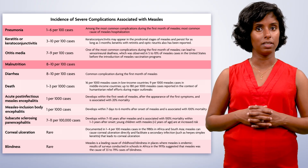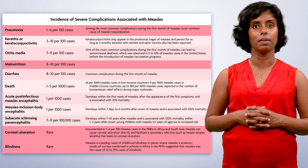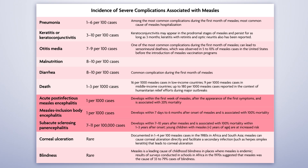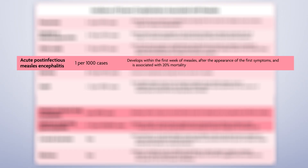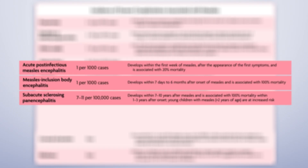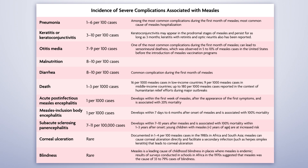Children with vitamin A deficiency can develop blindness due to severe corneal ulceration or perforation. There are also important neurologic complications including acute post-infectious encephalitis, measles inclusion body encephalitis (MIBE), and subacute sclerosing panencephalitis (SSPE), all with severe long-term consequences. Measles-associated encephalitis can occur during the first seven days of infection, between one to six months post-infection, or even years after recovery. Given the severity of these complications, vaccination remains the best way to prevent infection and protect vulnerable members of our communities.